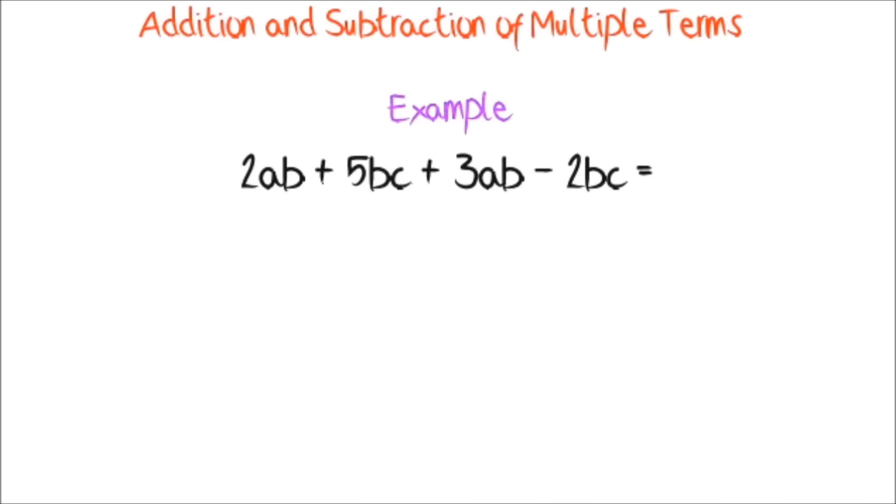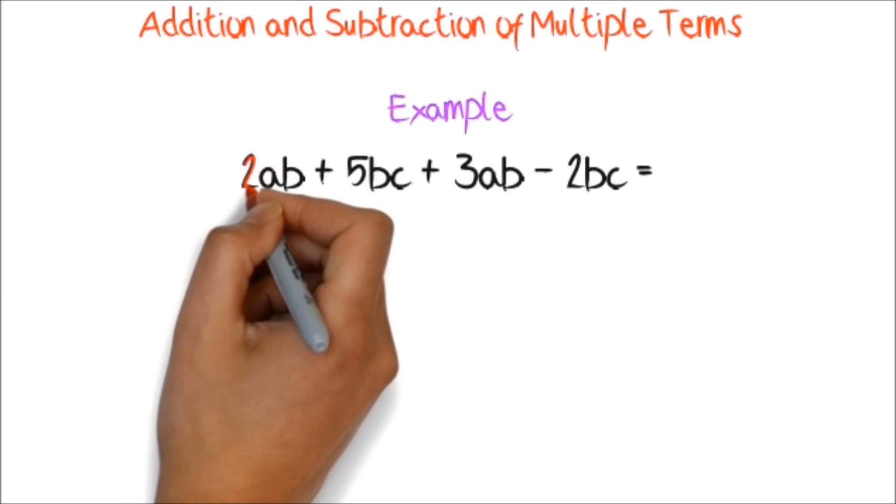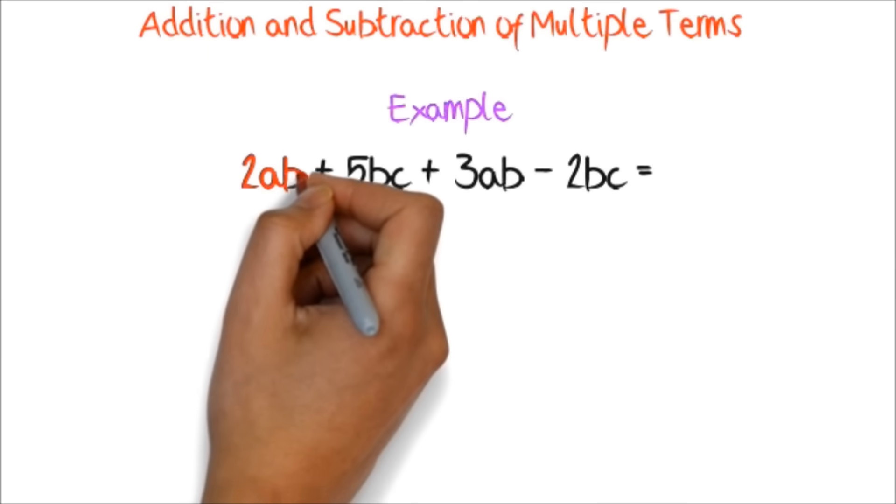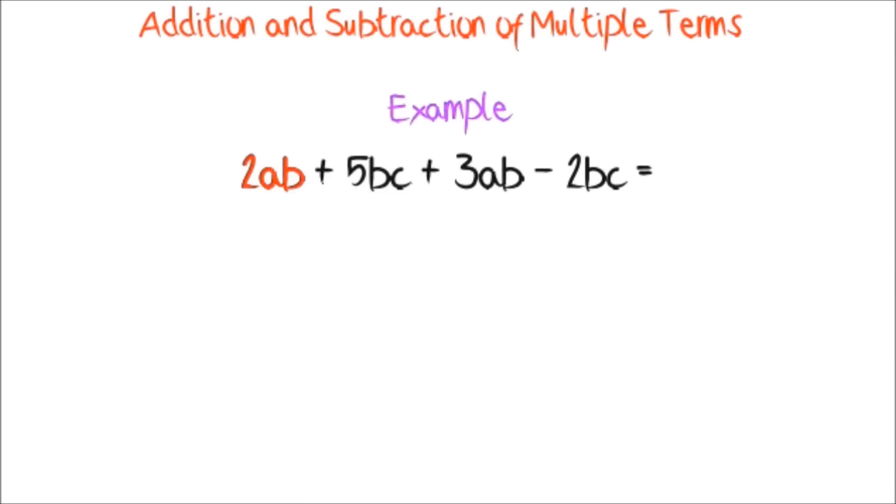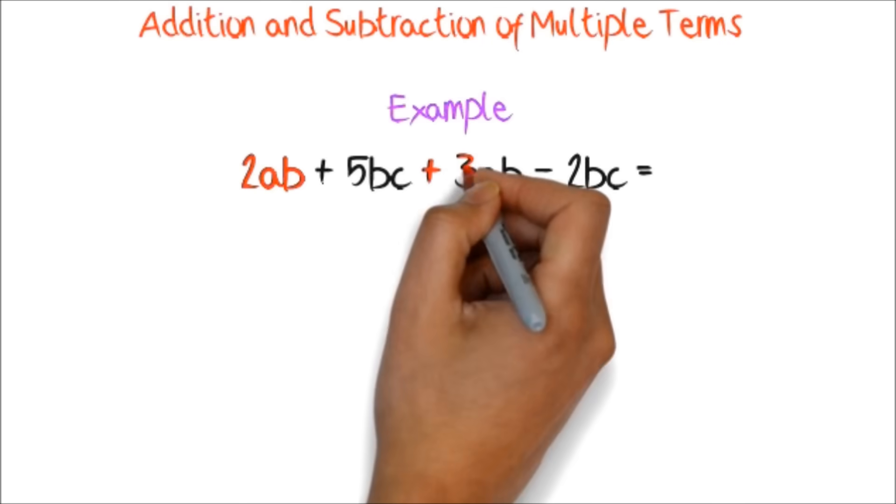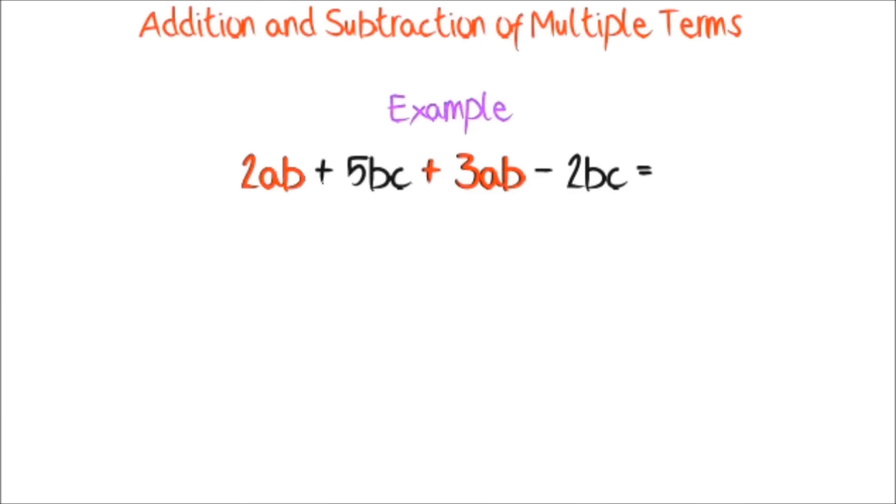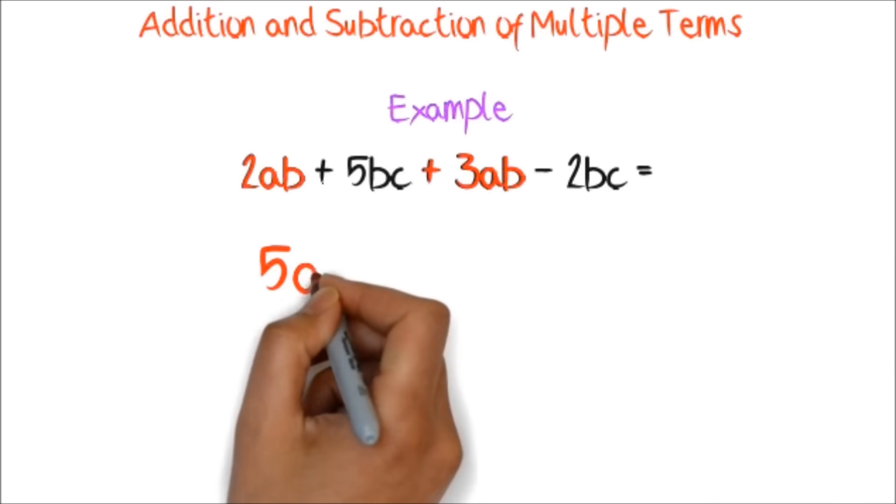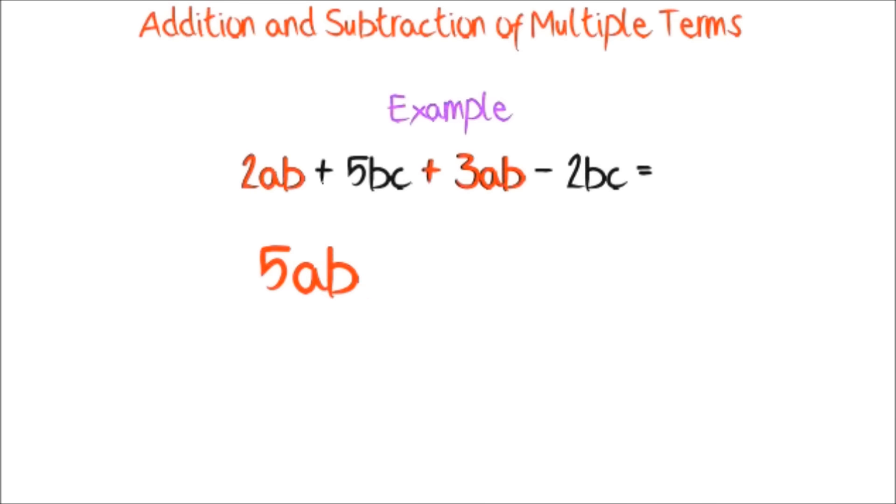Here, we take the first term, 2ab, and find out if there are other terms with the same letters after it. We notice we have 3ab. So, we can add 2ab and 3ab to get 5ab.